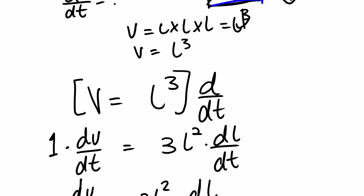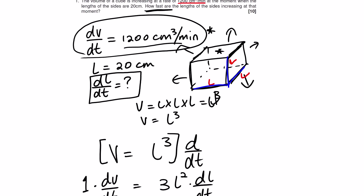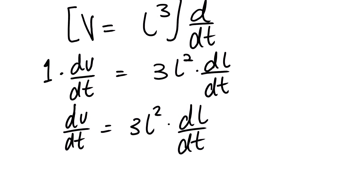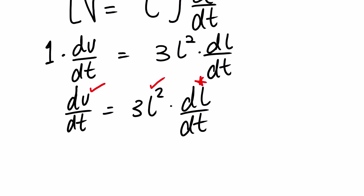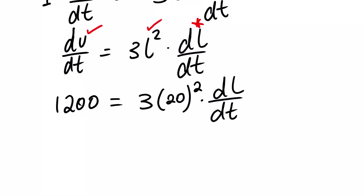Remember from the given data: we are looking for dL over dt, we have dV over dt, and we also have the length. From this equation we can directly substitute. We have 1200 equals 3 times 20 squared multiplied by dL over dt. From here we can solve for dL over dt.